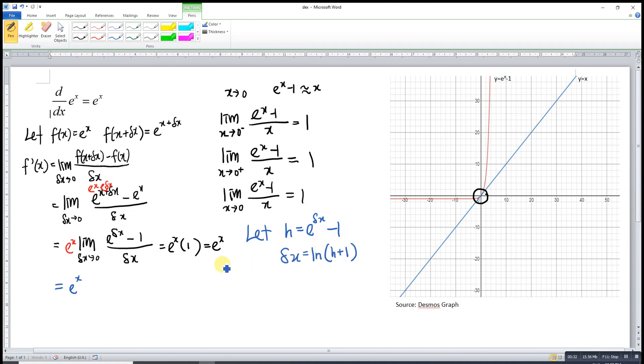So when we rearrange, we obtain delta x is equal to ln(h + 1). So from here, when delta x approaches 0, when we substitute e to the power of 0 is 1, 1 minus 1 is 0. So meaning to say we have h approaches 0.